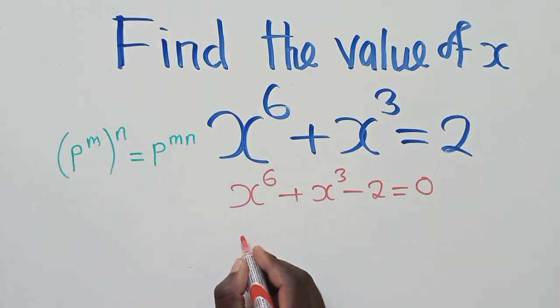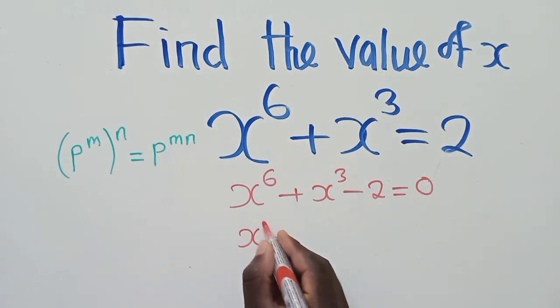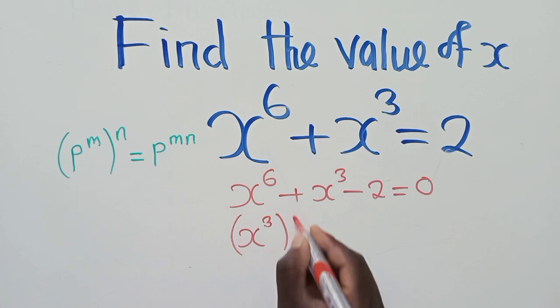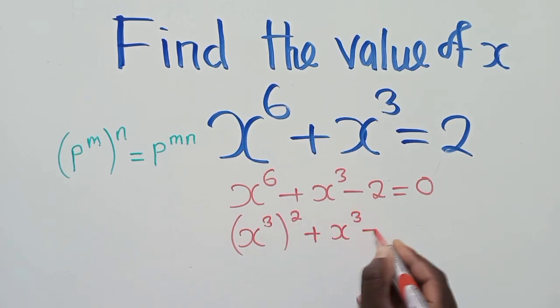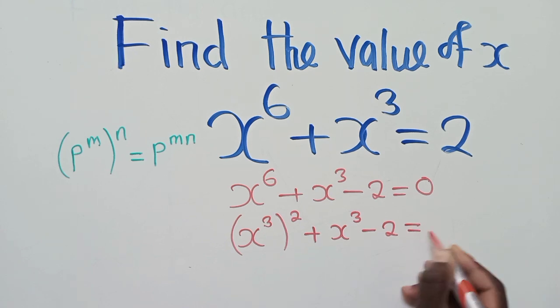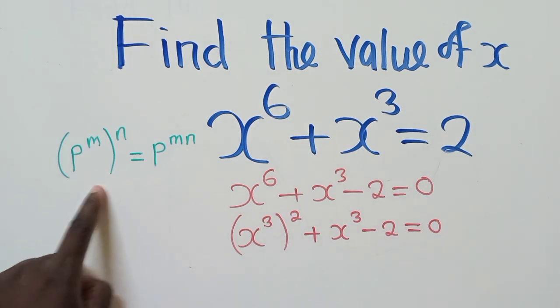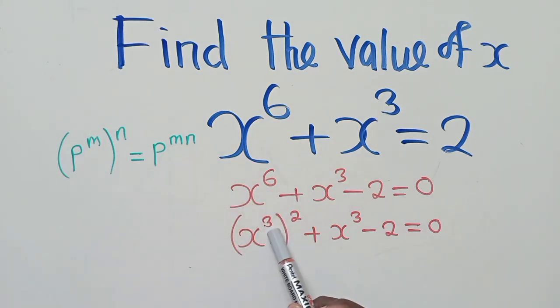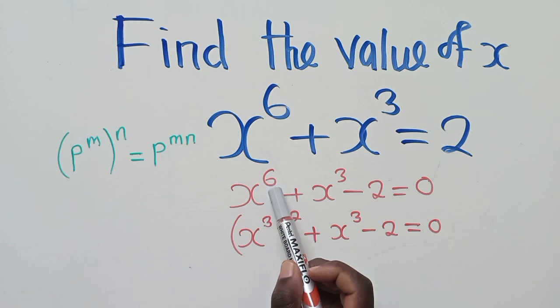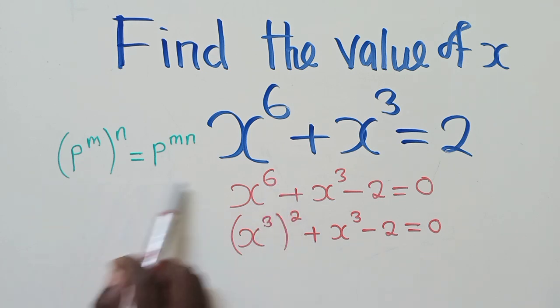So first here we shall say x to the power 3 and that to the power 2 plus x to the power 3 minus 2 is equal to 0. So I've just applied this law right here just to separate because I know that 3 times 2 will give me power 6, which satisfies this law.